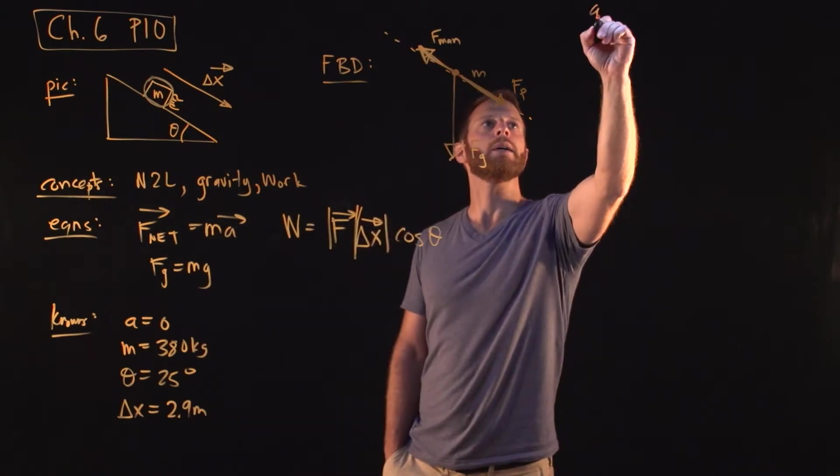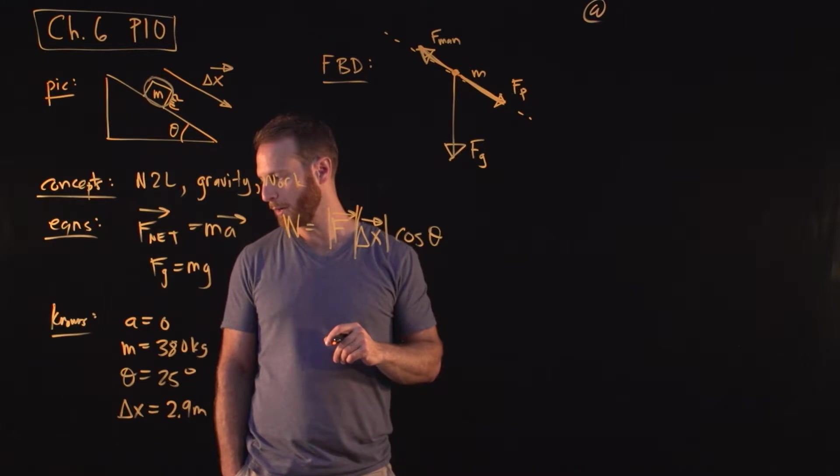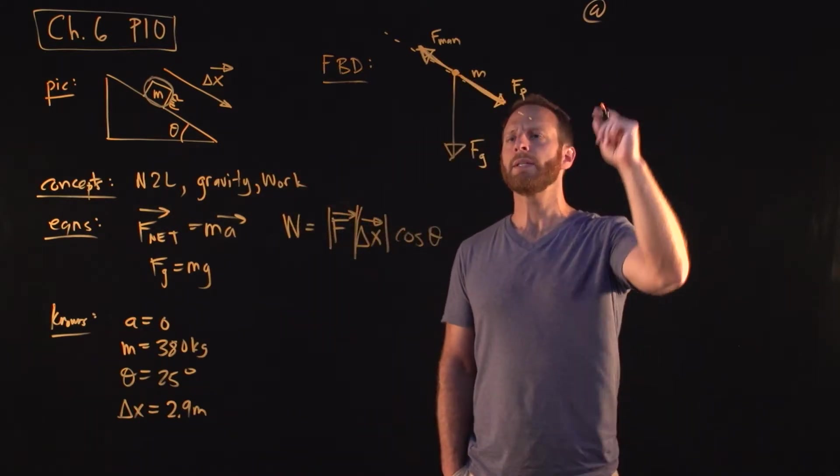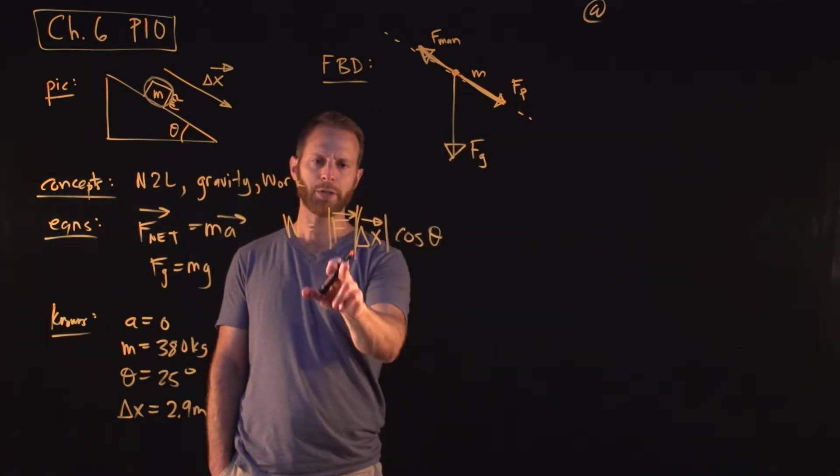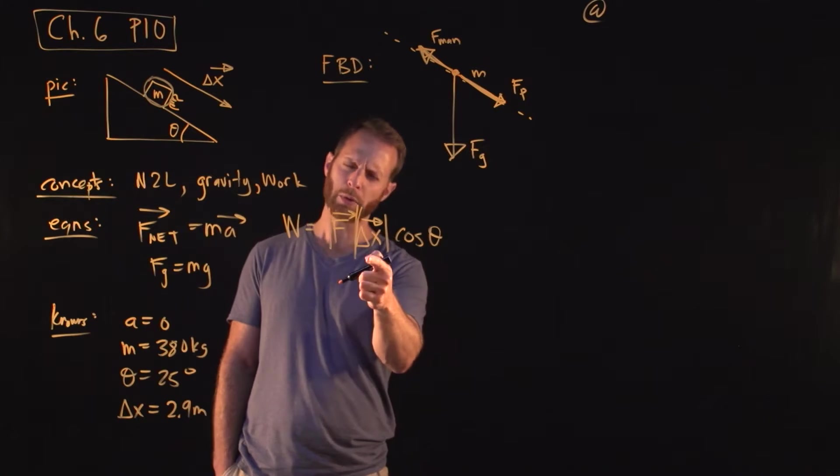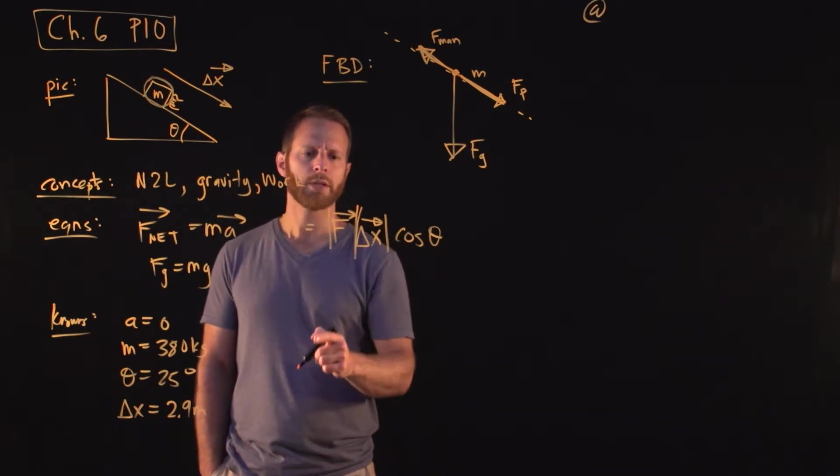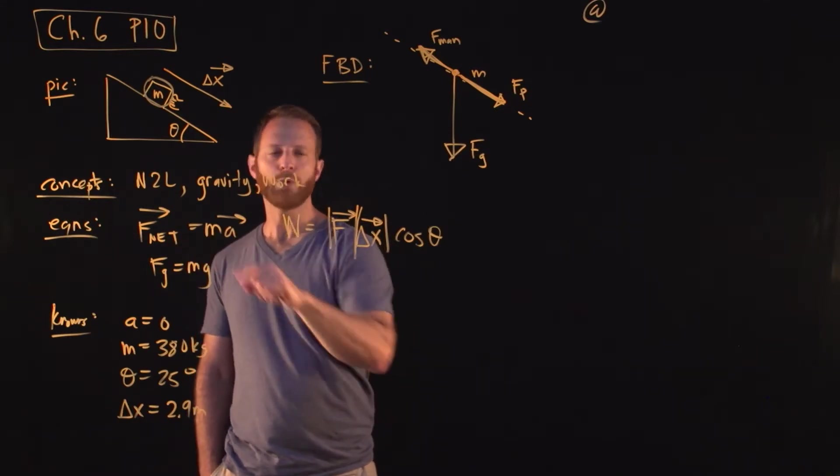The first thing we want to do, first part A, is to get the work done by the man. To get there, we're going to need to know - we look at the equation for force - we're going to need to know how much force the guy is pressing. Because we know the displacement, we can think about the angle. How much force does the guy exert on the piano? We need to use, we need to think about Newton's second law.